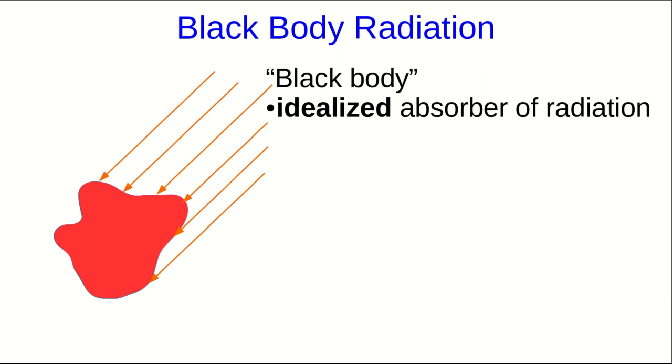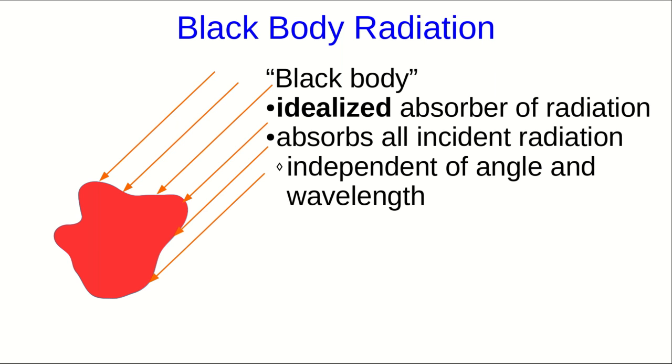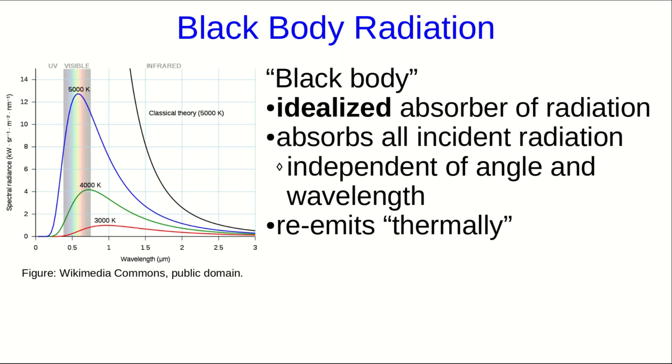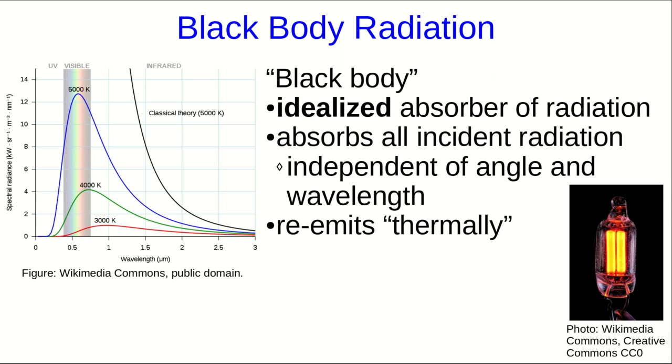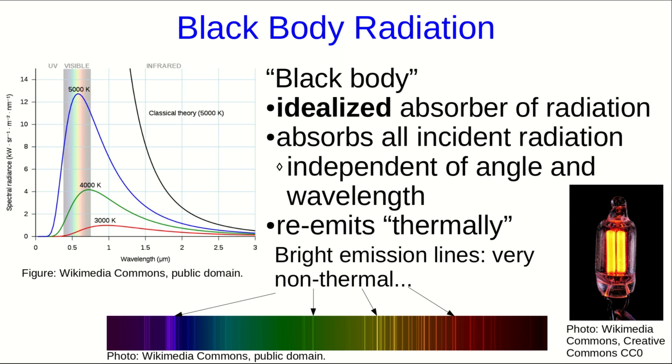Now, that textbook doesn't behave like a black body in the visible range of the spectrum, but it may actually be a pretty good black body in the infrared. So, the black body absorbs all incident radiation independent of angle and wavelength, and it then re-emits it thermally. I'm not going to go into detail about what we mean by thermally, but what it means essentially is that there's a characteristic shape to the spectrum, unlike something like a neon light, where if you look at its spectrum, it has bright emission lines. That's characteristic of very non-thermal emission.